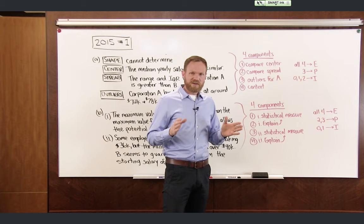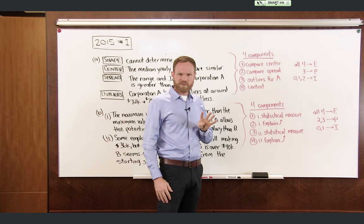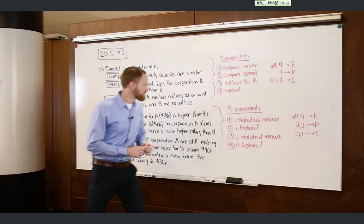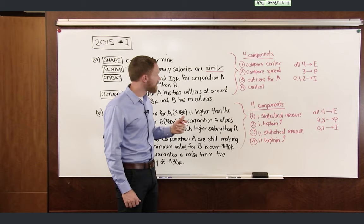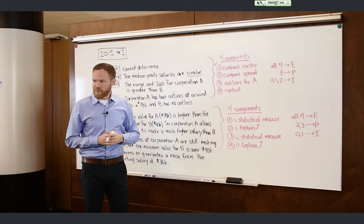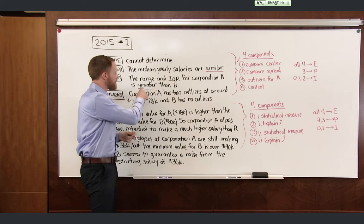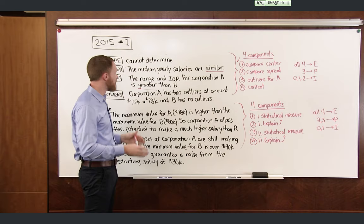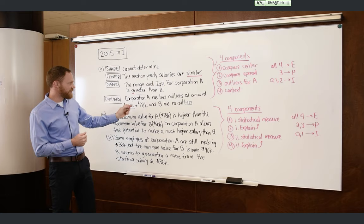Now let's look at what the rubric says and exactly what was needed for full credit. There are two parts graded: Part A and Part B. In Part A, there are four components that must be satisfied for full credit. The first is to compare the center — in the model solution, we stated the medians are similar. For comparing the spread, we said the range and IQR for corporation A is greater than corporation B.